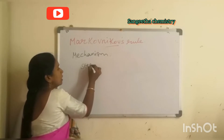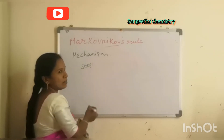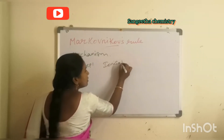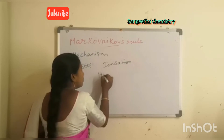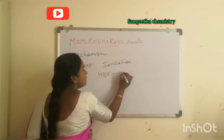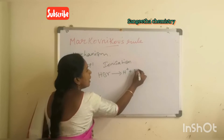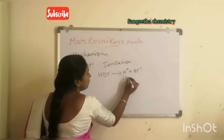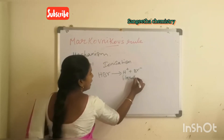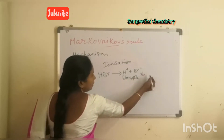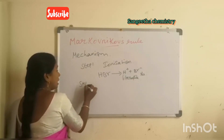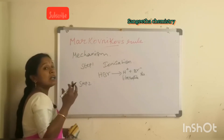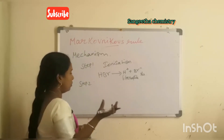Step 1 is ionization. HBr splits into H⁺ and Br⁻. H⁺ is the electrophile and Br⁻ is the nucleophile.